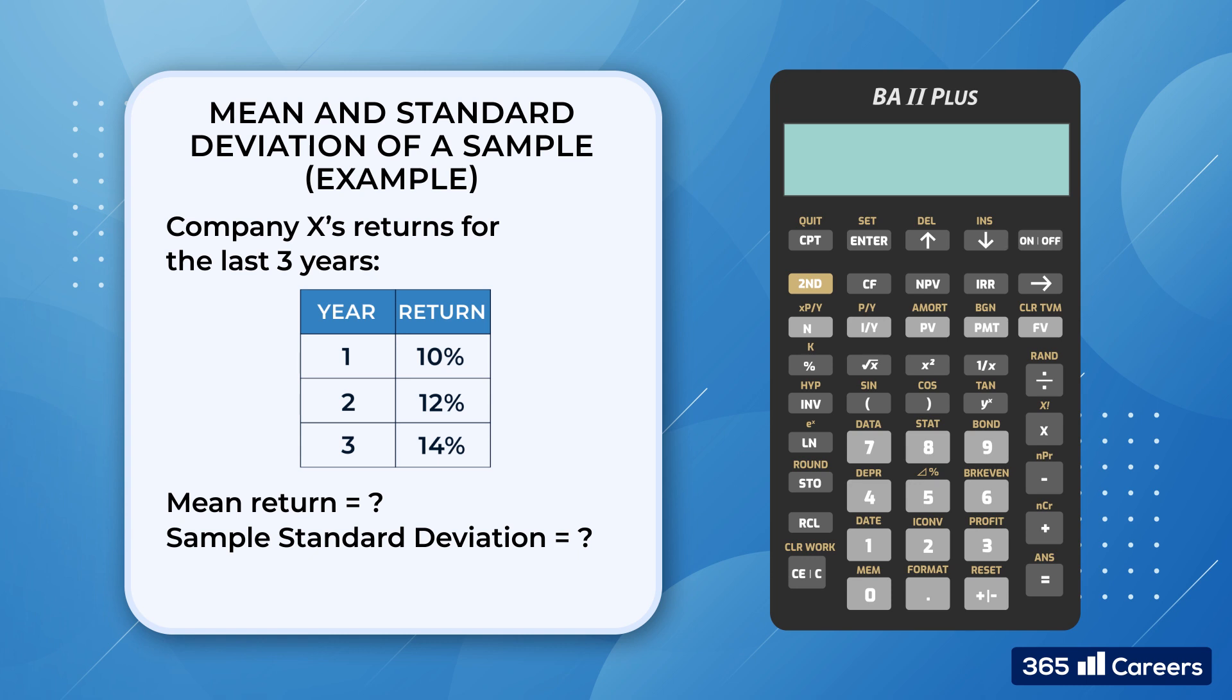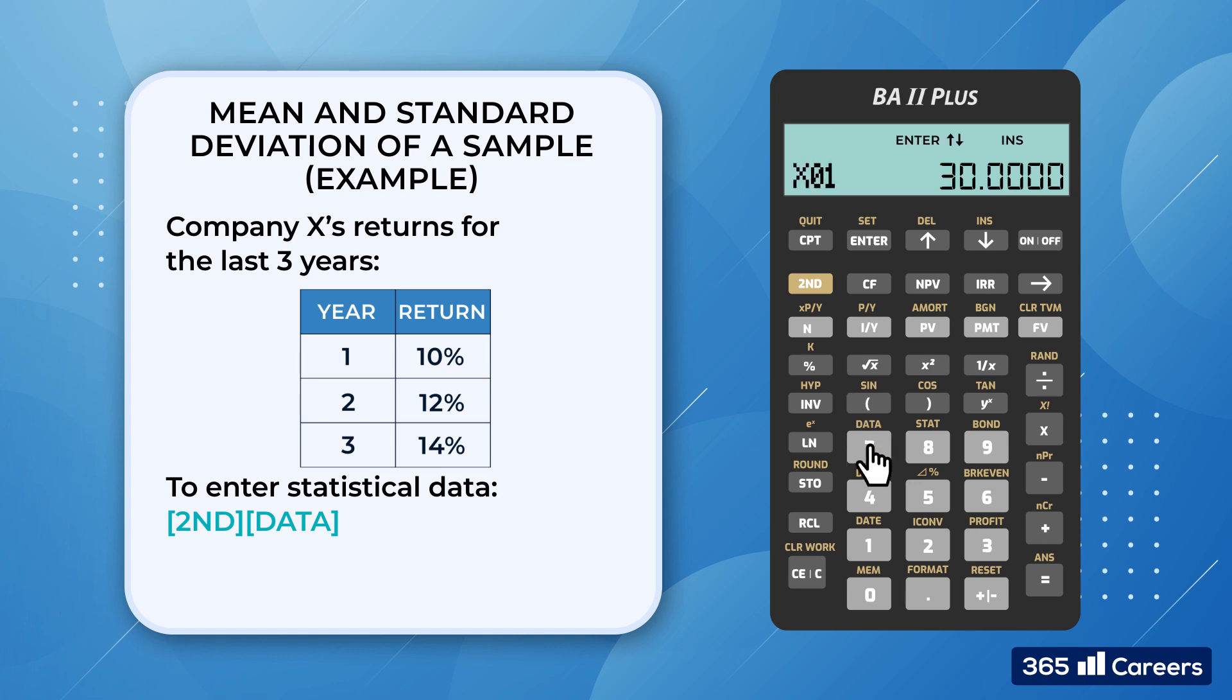First, we need to select the calculator's data entry mode by pressing 2nd Data, which is the second function of key 7. As we mentioned before, it's always a good practice to clear the calculator's memory registers by pressing 2nd Clear Work.